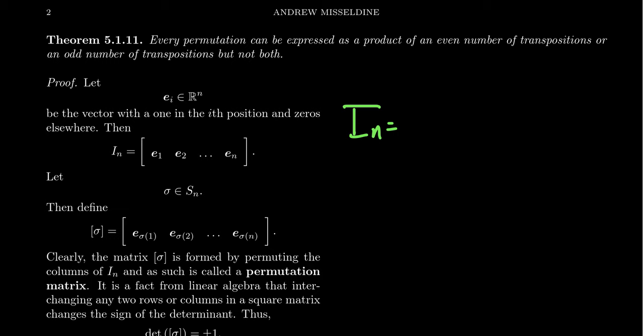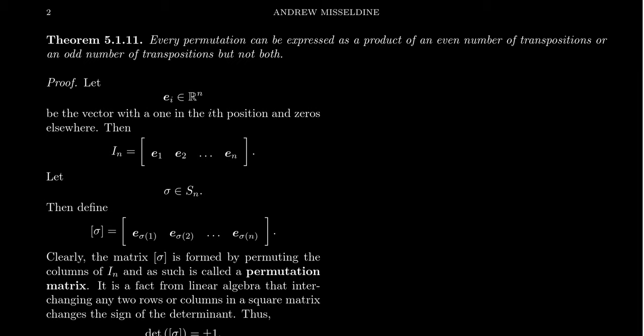So we can write the identity matrix as the matrix whose column vectors are the e_i's: e_1 is the first column, e_2 is the second column, and so on. This is an important thing to remember.